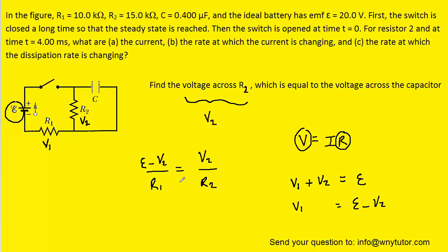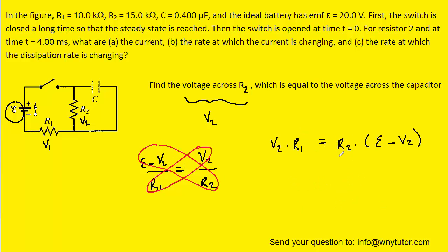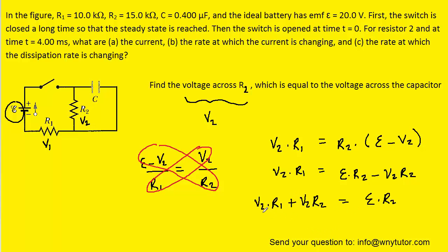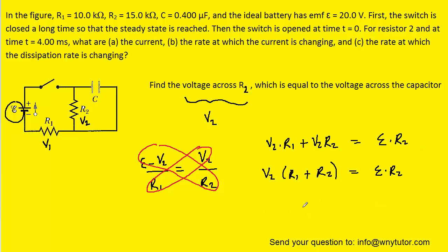We make it our goal to solve for V2. We can cross-multiply, then distribute R2 into the parentheses. We can add the term V2·R2 over to the left-hand side. Since we have a factor of V2 in each term, we can factor it out. Finally, we divide by the term R1 plus R2 in order to isolate V2.